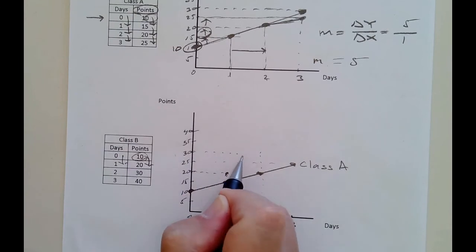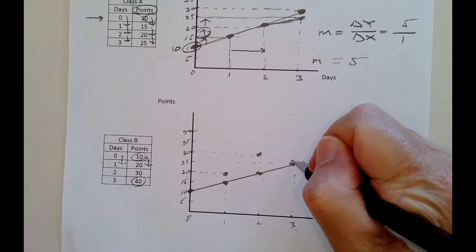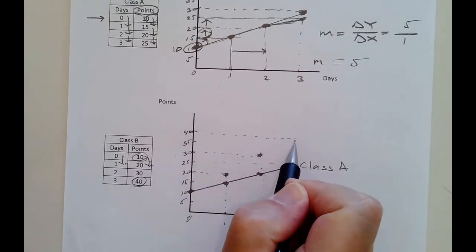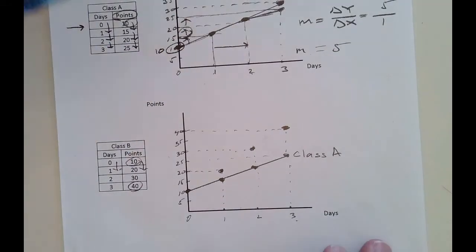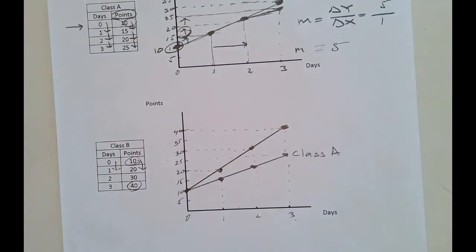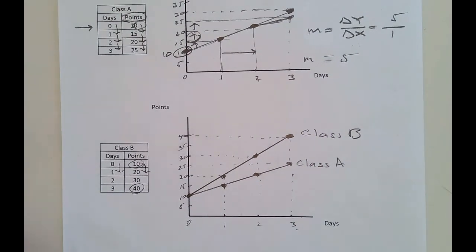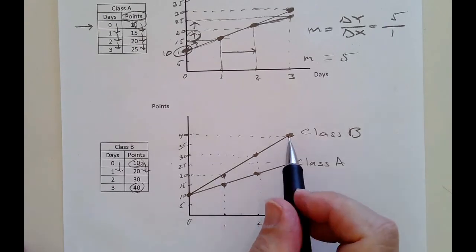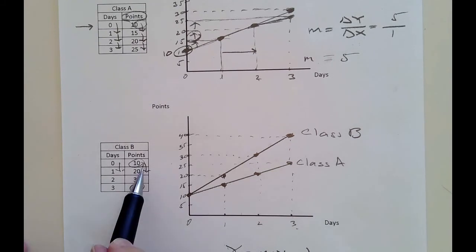Let me get my ruler out and graph the line for class B. Class B has a higher slope — that's why it rises faster. The y-intercept is the same, so going back to y equals mx plus b, b is still 10. But now every time you come to class, you get 10 more points, not 5. So the slope is 10, not 5.